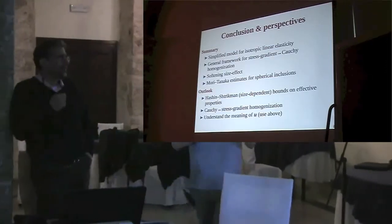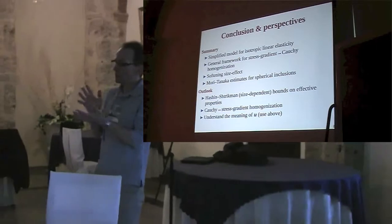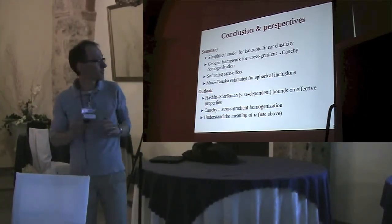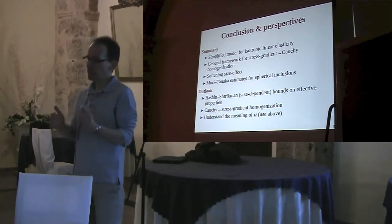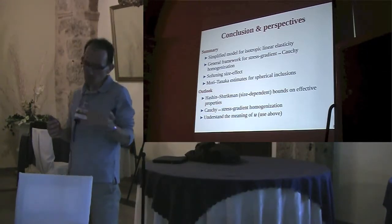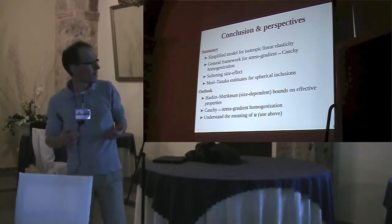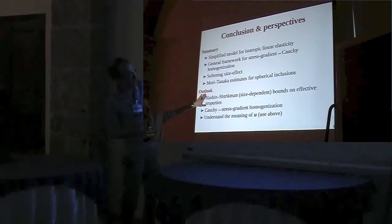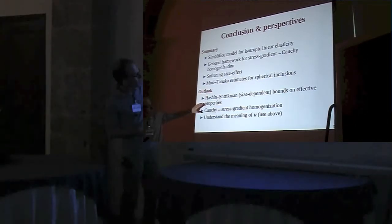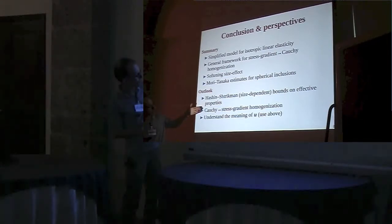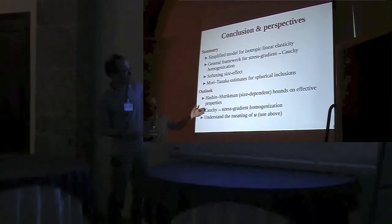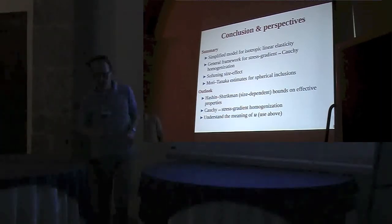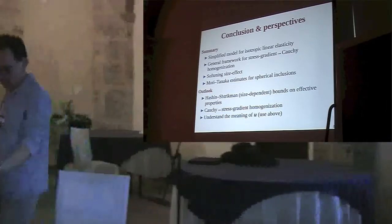In conclusion, I have presented a simplified model for isotropic stress gradient elasticity, applied it to homogenization, and as expected such a model exhibits a size effect — and less expectedly, it is a softening size effect. Future work includes deriving Hashin-Shtrikman bounds on the effective properties, exploring the homogenization case starting from Cauchy at the micro level and going to stress gradient at the macro level, and personally, understanding what U really means. Thank you for your attention.